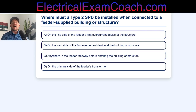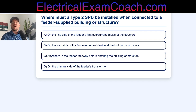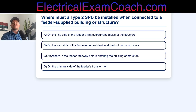Option A: on the line side of the feeder's first overcurrent device at the structure. Option B: on the load side of the first overcurrent device at the building or structure. Option C: anywhere in the feeder raceway before entering the building or structure. Or Option D: on the primary side of the feeder's transformer.